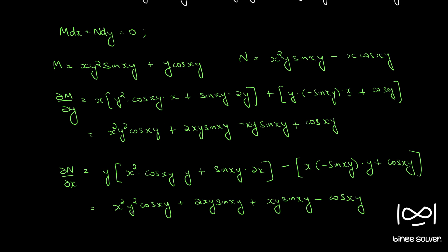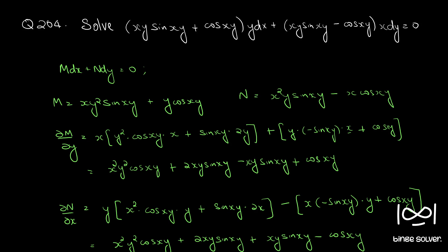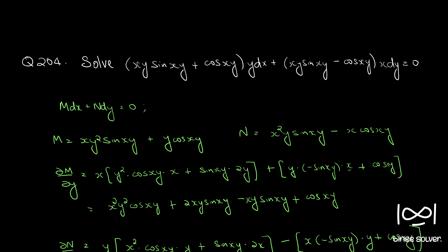Comparing the two, these two terms are equal but here there is a negative sign: in ∂M/∂y it is plus, and in ∂N/∂x it is minus. So we can see that ∂M/∂y is not equal to ∂N/∂x, and therefore the differential equation is not exact.